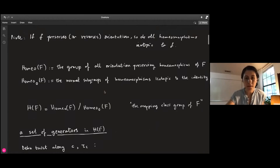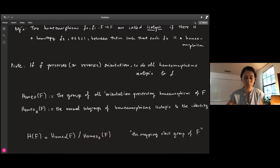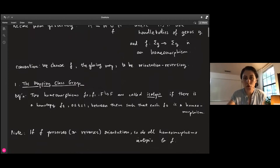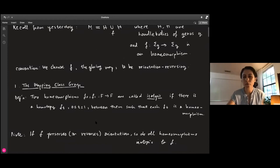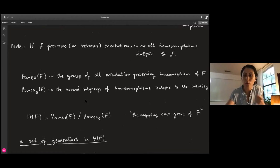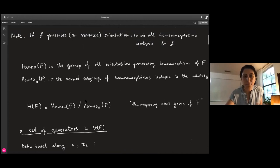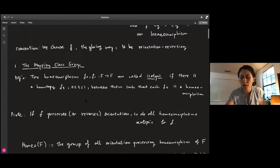This gives us the definition of the mapping class group: the group of all orientation preserving homeomorphisms of S modulo the normal subgroup of homeomorphisms isotopic to the identity. This group is an index 2 subgroup in the group of all homeomorphisms of F. There's also a way to see orientation reversing homeomorphisms from the mapping class group.